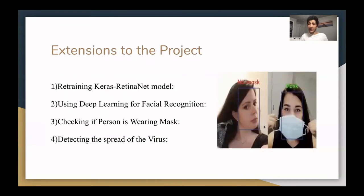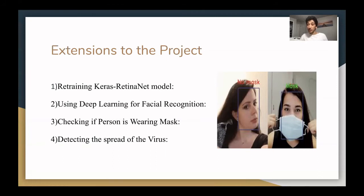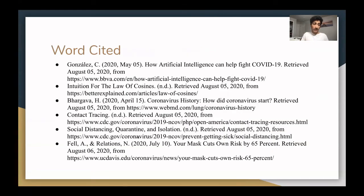What are some extensions for the project? While Keras's RetinaNet model is currently pretty effective, it can be improved even more by retraining the model. We can also use deep learning for facial recognition to improve the accuracy of detecting faces in every frame. Next, we can also check if a person is wearing a mask, because if a person is wearing a mask, the distances between people can be reduced, since masks greatly reduce the possibility of contracting the virus. Finally, we can add an option in the MongoDB database to show which people have currently had the virus, to further optimize the impact of the contact tracing. The software can also be installed in CCTV cameras to be used in malls, schools, and corporate offices.